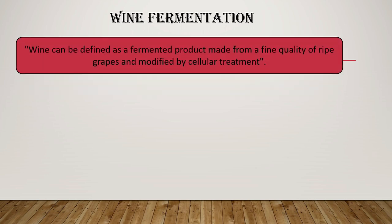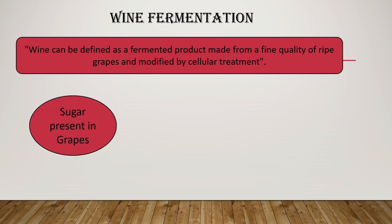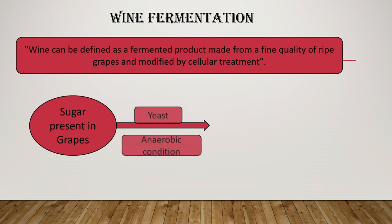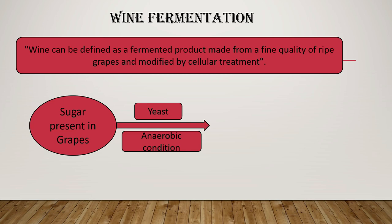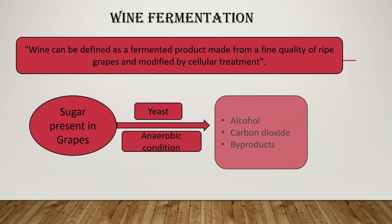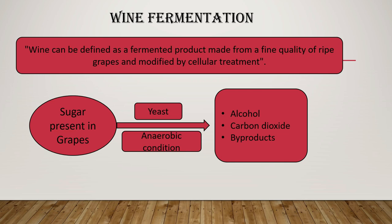Wine can be defined as a fermented product made from fine quality ripe grapes, modified by cellular treatment. These ripe grapes undergo fermentation — they are inoculated with yeast culture and under anaerobic conditions, the sugar present in grapes is fermented into alcohol, carbon dioxide, and by-products. These are the three products obtained by fermentation of grapes.